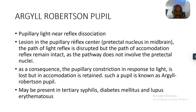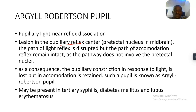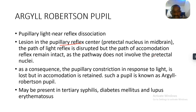Starting with the first one — what is Argyll Robertson pupil? It is popularly a light and near reflex dissociation. It is a lesion in the pupillary reflex center that has a pretectal nucleus in the midbrain. The pathway of light reflex is disrupted, but the pathway of accommodation reflex remains intact, as the accommodation pathway does not involve the pretectal nucleus.